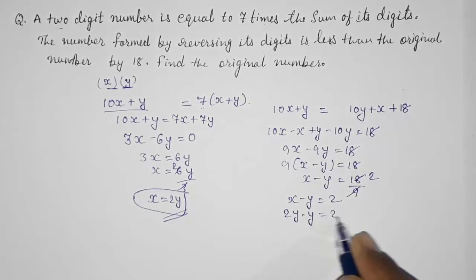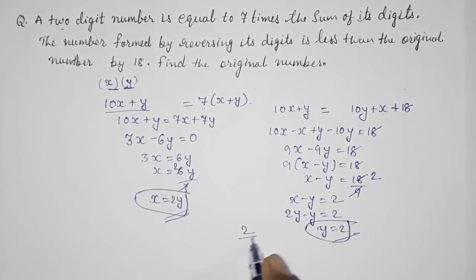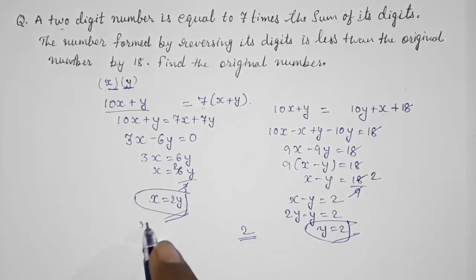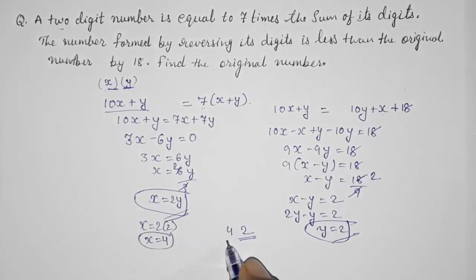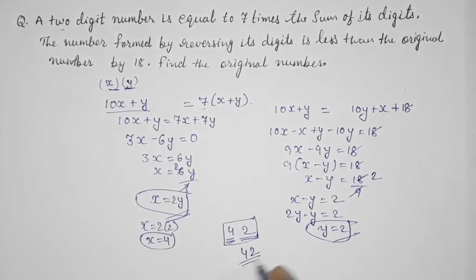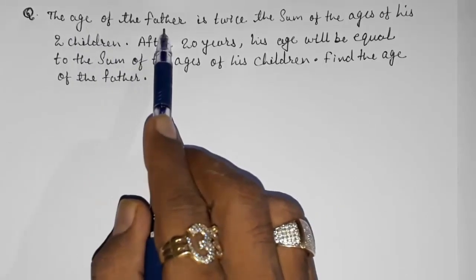Now finding x: x equals 2y equals 2 times 2, so x equals 4. The tens place digit is 4 and the unit place digit is 2, so the original number is 42.